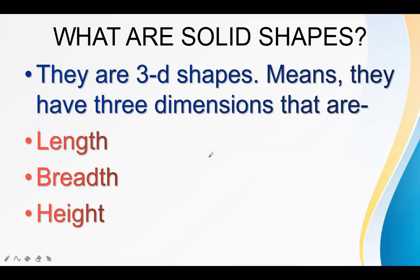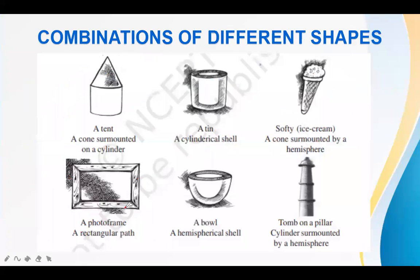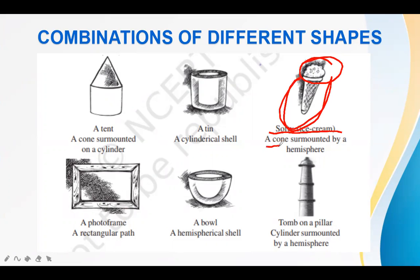While 2D shapes have only two dimensions — length and breadth — they don't have height. We in our day-to-day life see combinations of different shapes. For example, let's take a soft ice cream. This part can be regarded as a cone, so this can be said as a cone surmounted by a hemisphere. These types of combinations of different shapes are also known as nested shapes.